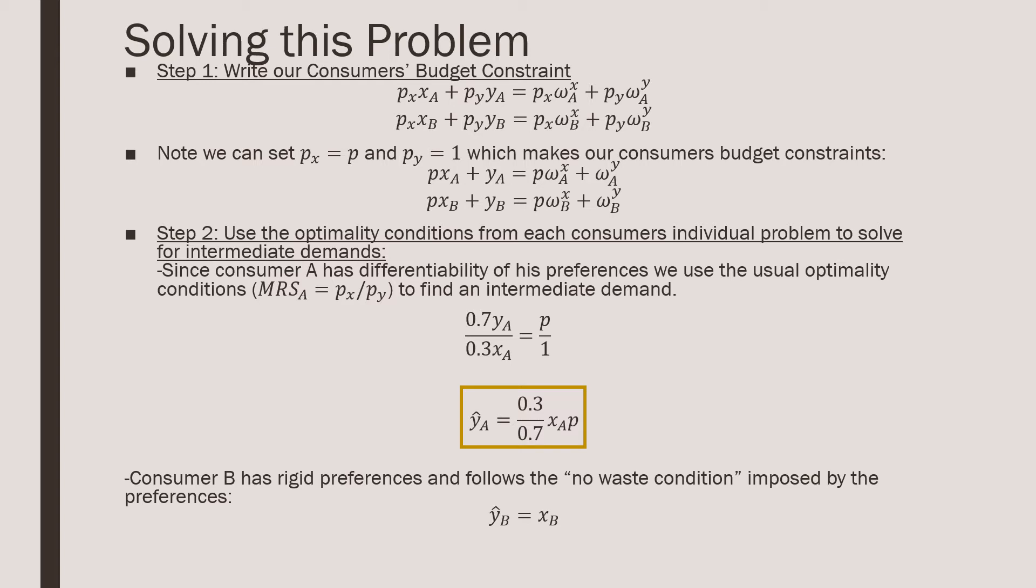Step number two is that we're going to solve each of our consumer's static optimization problem. So let's consider consumer A. For consumer A, he has differentiability of his preferences and we use the usual optimality conditions. You could use a Lagrangian for this, but really what we want to get is where our marginal rate of substitution is equal to the price of good x over the price of good y. And the intermediate demand that we get, which is crucial for solving this problem for A, is equal to 0.3 all over 0.7 times xA times p.